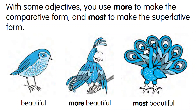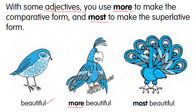With some adjectives, you use more to make the comparative form and most to make the superlative form. Like beautiful — beautiful is the positive adjective form. But when it ends with FUL, you cannot change it with ER. Beautifuler is wrong. So you need to use more beautiful for the comparative form and most beautiful for the superlative form. So: beautiful, more beautiful, most beautiful.